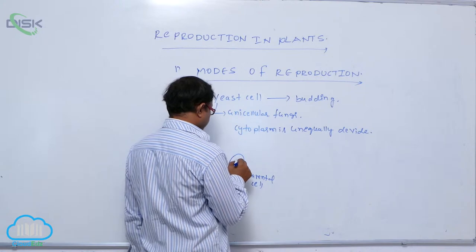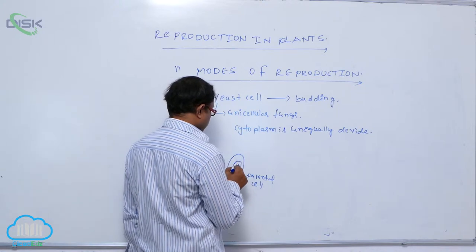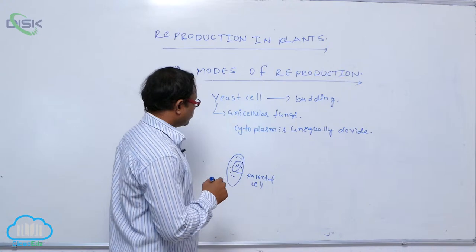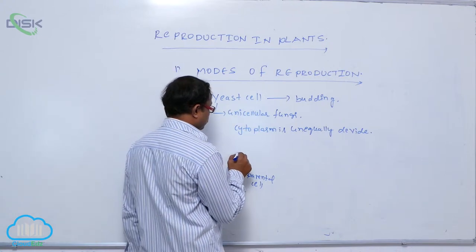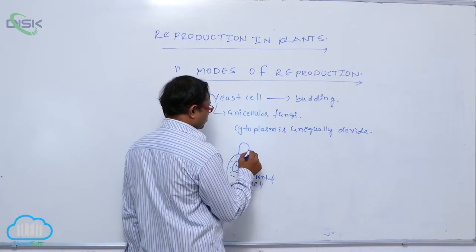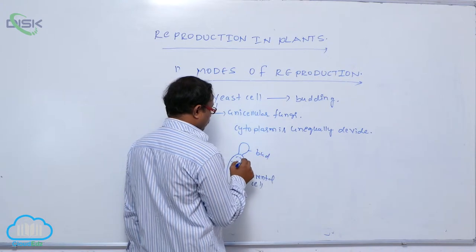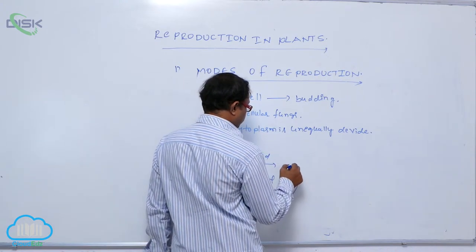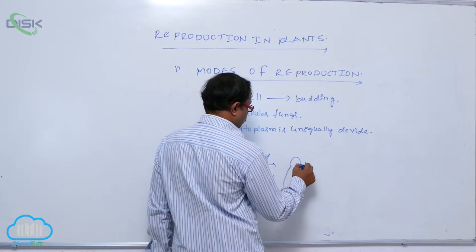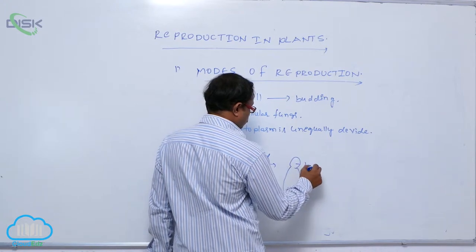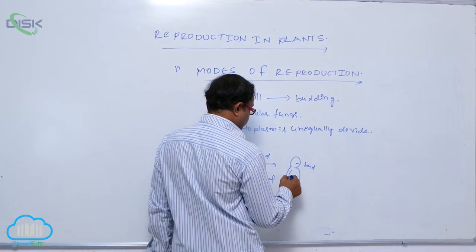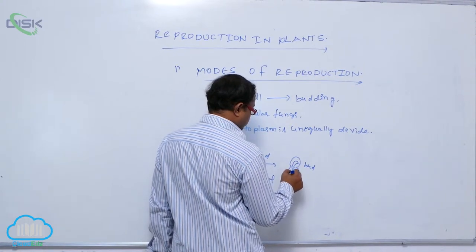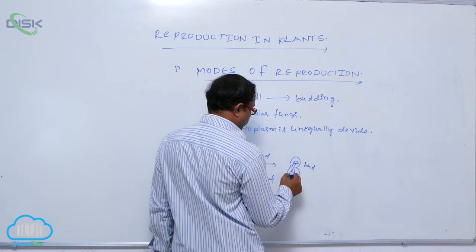In the parental cell, there is a nucleus and cytoplasm. After that, you are producing a bud above the parent. The nucleus is unequally divided, and some part of the nucleus enters into that bud.